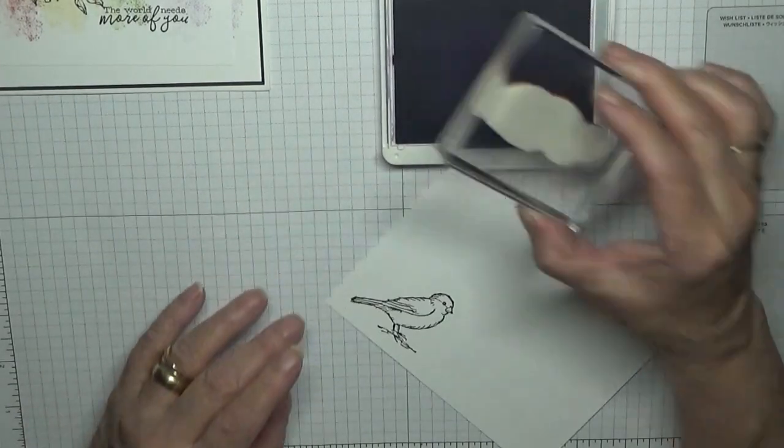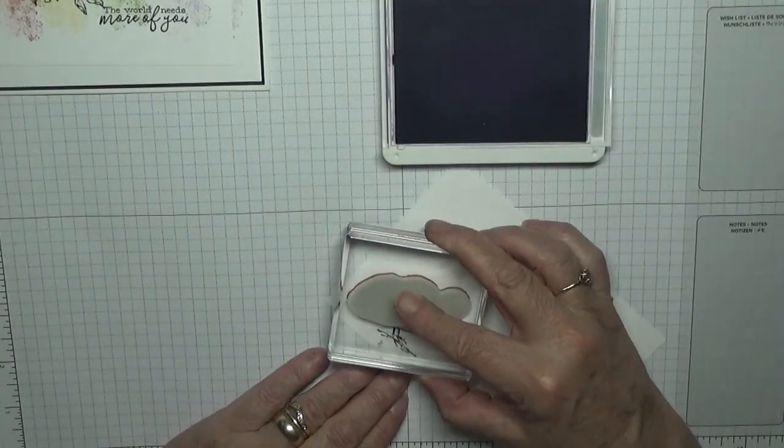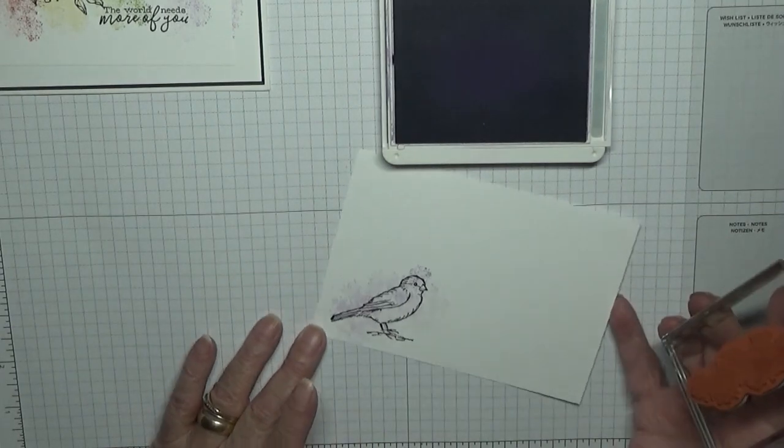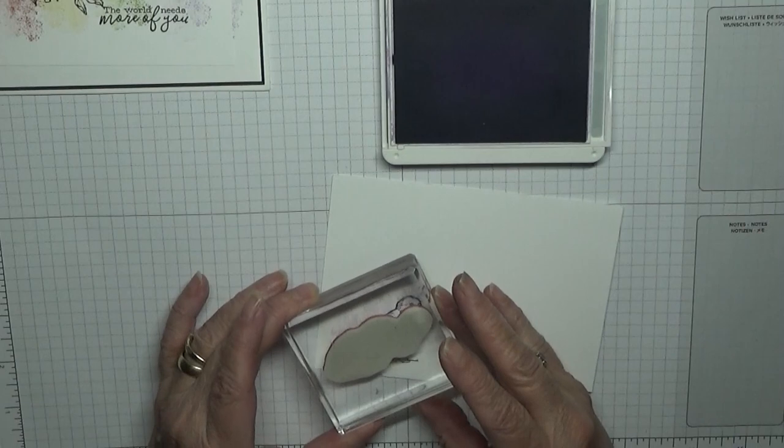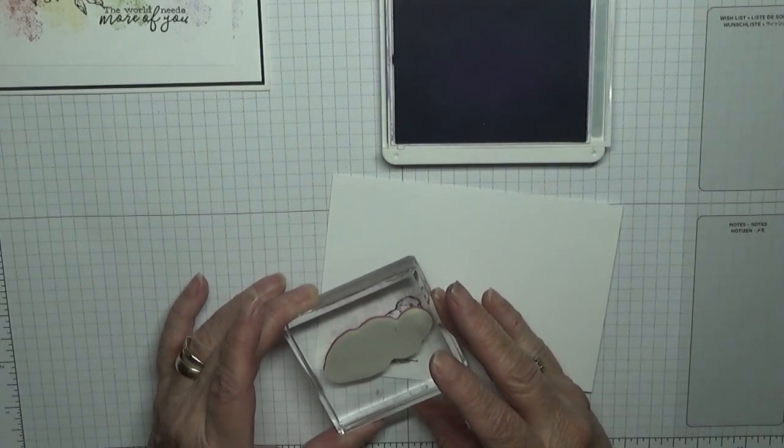Well that way. And all I did was took this stamp and put it down lengthways over the bird and it near enough covers it.